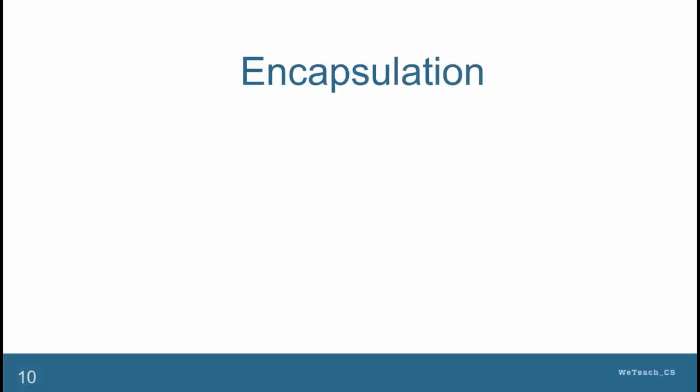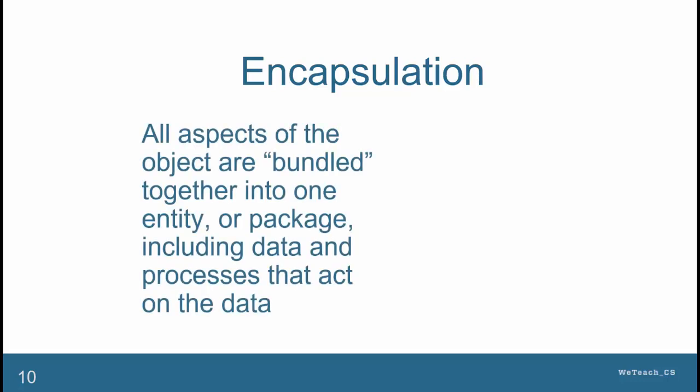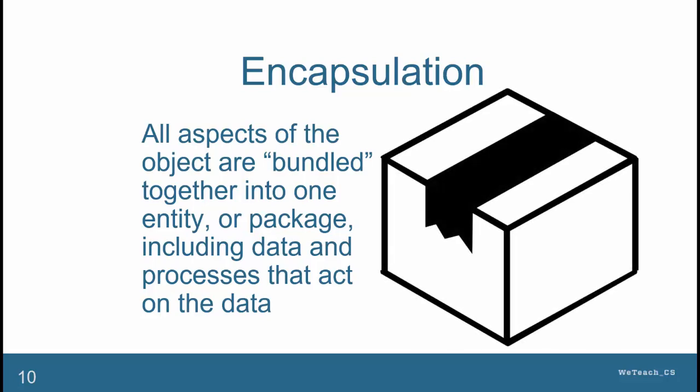The object-oriented aspects of abstraction and encapsulation are often referred to in the same discussion, since they are related. Encapsulation refers to the idea that an object is defined as a single entity or package, with several inner working parts, including data or information, as well as internal processes that deal with the data.